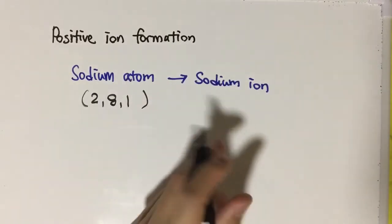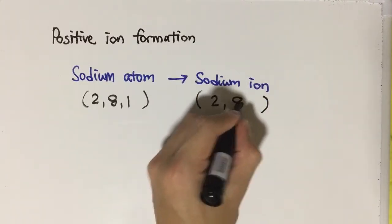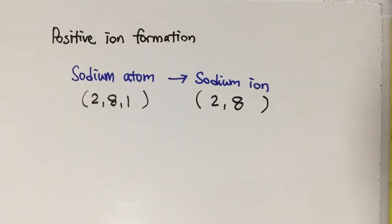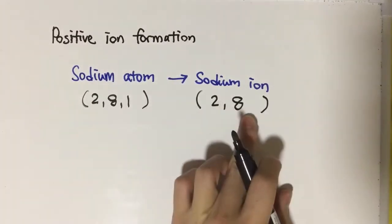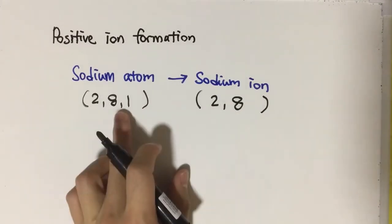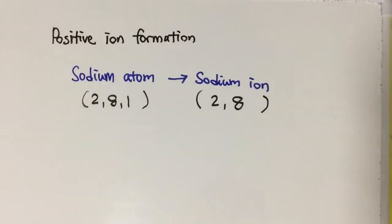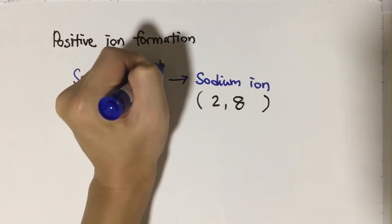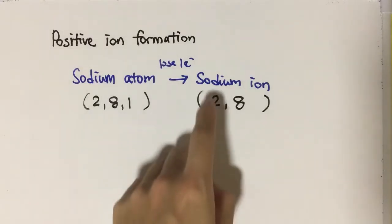How is sodium ion formed? Let's see the electron arrangement of sodium ion. Based on the electron arrangement difference between sodium atom and sodium ion, can you tell me how does sodium ion form? One electron is different — the electron is lost. So sodium atom actually loses one electron to become sodium ion.